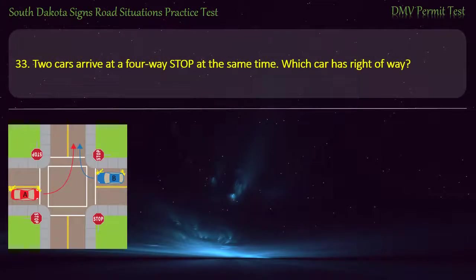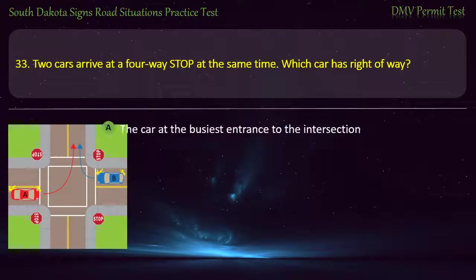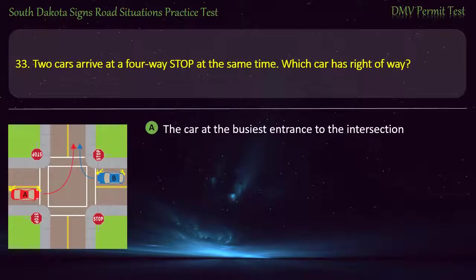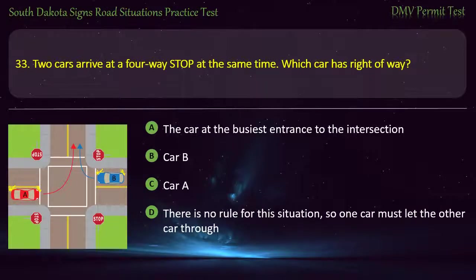Question 33: Two cars arrive at a four-way stop at the same time. Which car has right of way? Options: The car at the busiest entrance to the intersection; Car B; Car A; There is no rule for this situation, so one car must let the other through. Answer: Car B.